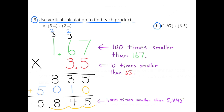Part B: 1 and 67 hundredths times 3 and 5 tenths equals 5 and 845 thousandths. This product is 1,000 times smaller than 167 times 35, because 1 and 67 hundredths is 100 times smaller than 167, and 3 and 5 tenths is 10 times smaller than 35, and 100 times 10 is 1,000. So I move the decimal point three places to the left to make it 1,000 times smaller.